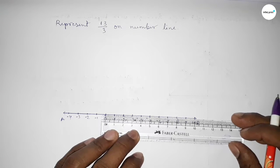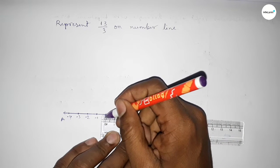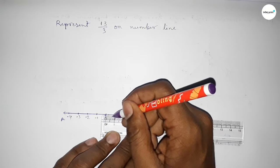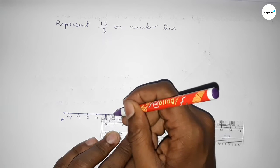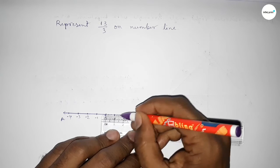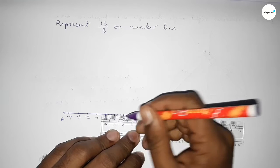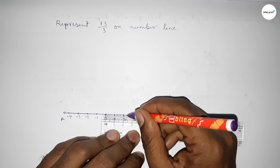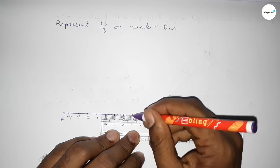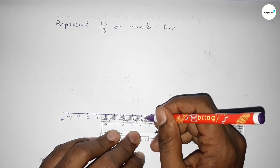Dividing the distance between 0 to 1 into three parts approximately — this is 0.3 something and this is 0.6 something approximately. Similarly, dividing between 1 to 2: 0.3 something and 0.6 something approximately. Again dividing between 2 to 3: 0.3 something and 0.6 something approximately.